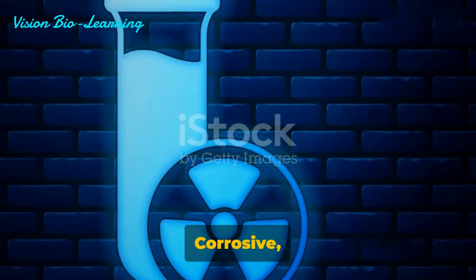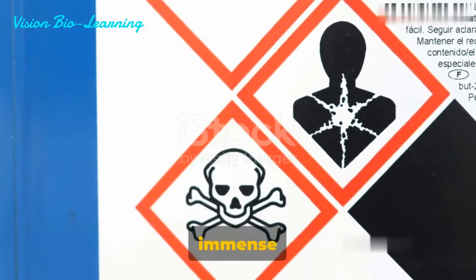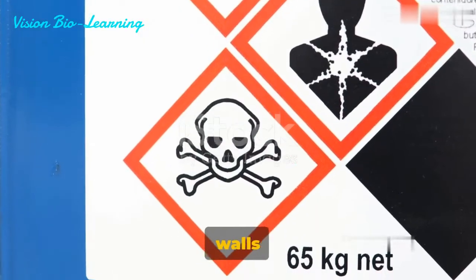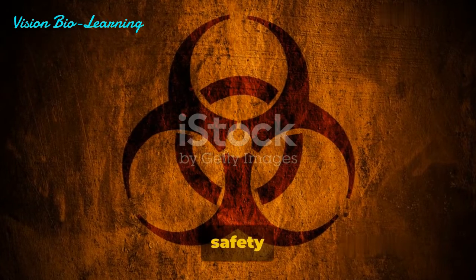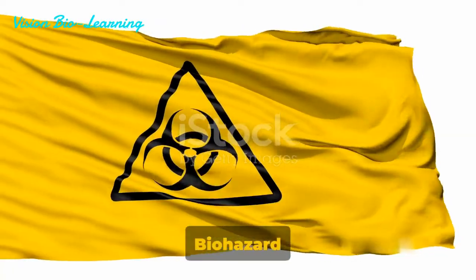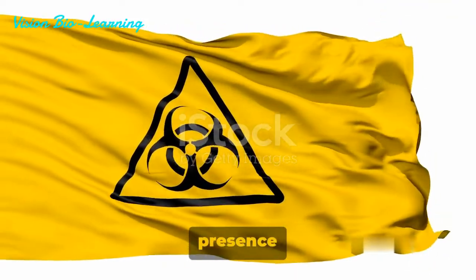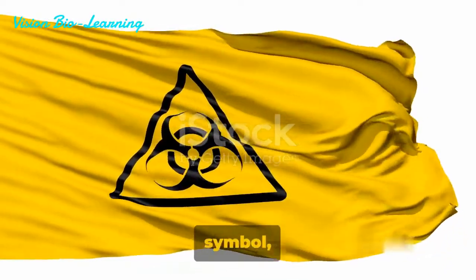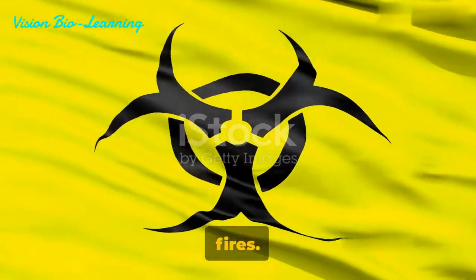To recap, we've covered the biohazard, flammable, corrosive, and radioactive symbols. Each of these signs holds immense significance in a laboratory setting — they are not mere decorations, but critical instructions and warnings that guide us to ensure safety and prevent accidents. The biohazard symbol, with its unique triple-curved design, alerts us to substances that can pose a threat to human health. The flammable symbol cautions us about substances that are easily ignited and can cause destructive fires.